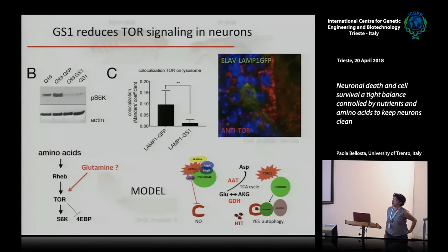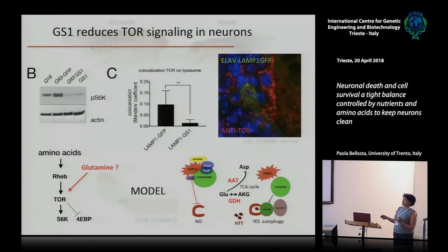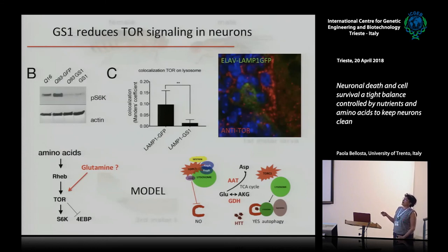However, we have more glutamine with GS1 overexpression. Another way to see if TOR is active is to see if it is localizing to the lysosome — because when TOR is active it has to be sitting on the lysosome to function and phosphorylate its targets. We analyzed this in neurons using a LAMP1-GFP marker for lysosomes and an anti-TOR antibody, and found that TOR is not active — it is not sitting on the lysosome. So TOR is inhibited even though we have more glutamine.